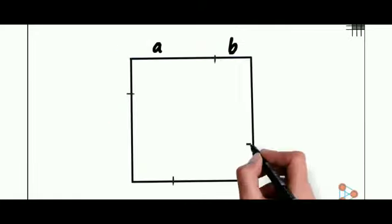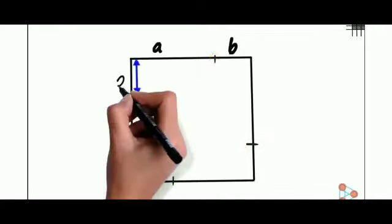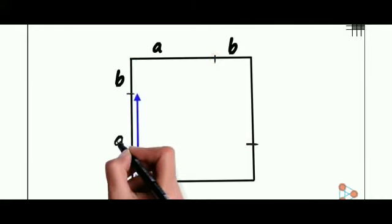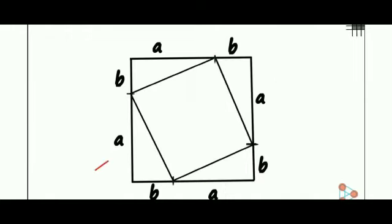We mark the points here, here and here. The points should be marked such that the length is B. This length is A, this is B and this is A, and these two lengths are also equal to B and A. We can see that we have four points, one on each side. This time we join the adjacent points.